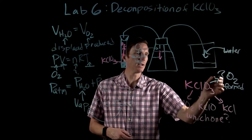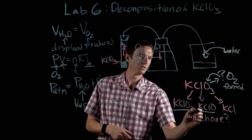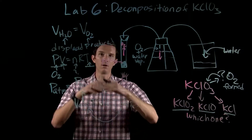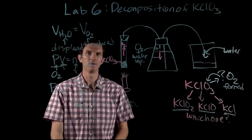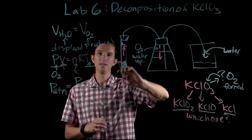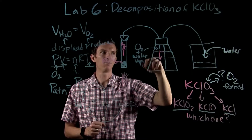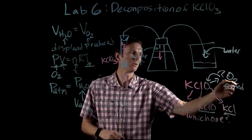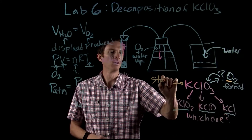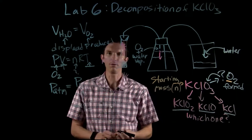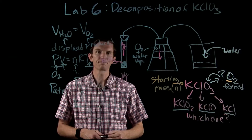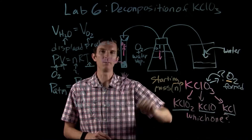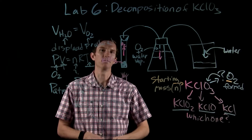We'll find the moles of oxygen and compare that to what we originally started with, answering the question: did we form potassium chlorite, potassium hypochlorite, or potassium chloride? Our overarching goal is to figure out which product is actually formed. To do that, we'll decompose our potassium chlorate, measure the oxygen formed by water displacement, find the moles of oxygen using the ideal gas law, and compare that to the starting number of moles. We're going to use Bunsen burners and set up an interesting apparatus to measure the volume of gas produced in this decomposition reaction.